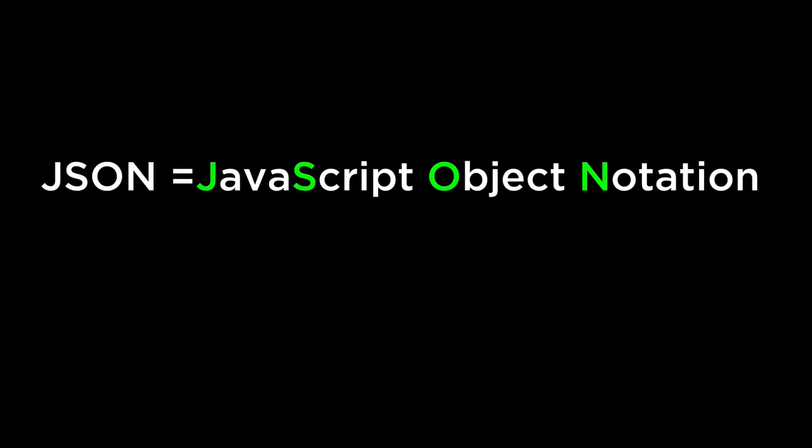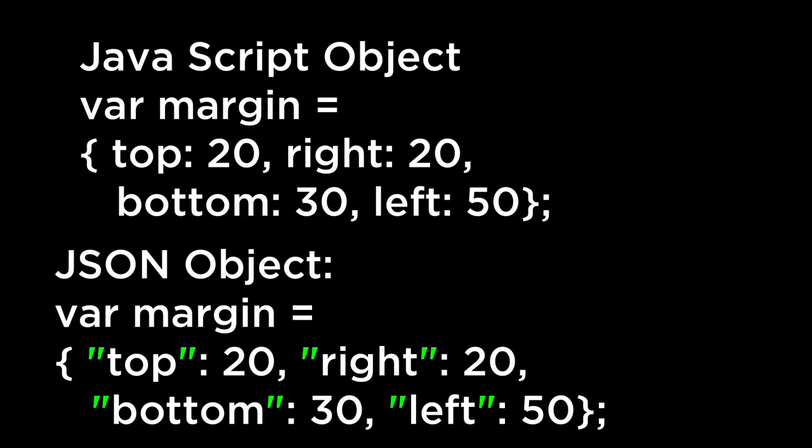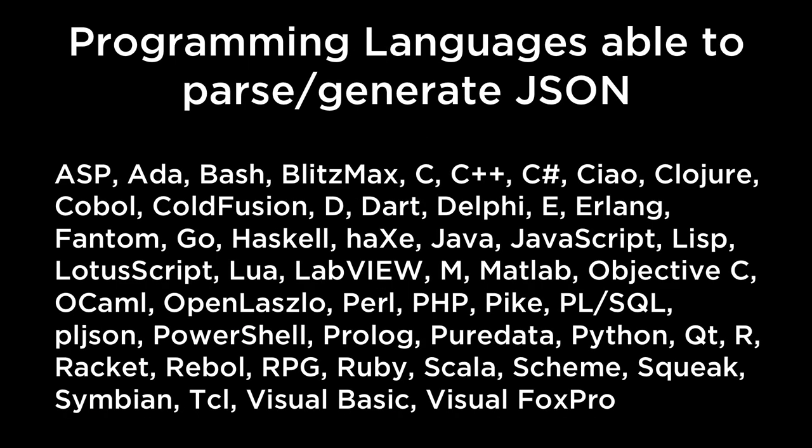JSON revisited. JSON is a text-based open standard designed for human-readable data interchange. It was initially based on JavaScript objects, derived from JavaScript for representing simple data structures and associative arrays called objects. It is now an open standard that is programming language independent. The difference comes from double quotes around the keys, which will come in very handy as we construct more complicated data visualizations using D3. As of the time of this recording, these are all the programming languages that are able to parse and generate JSON data structures.